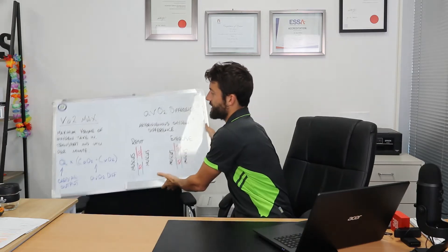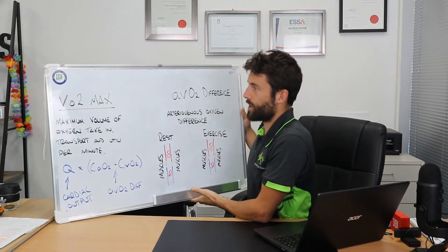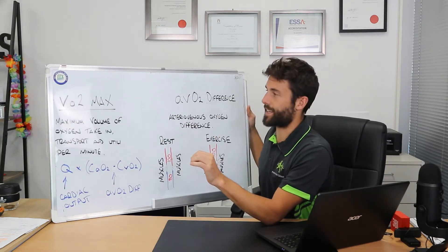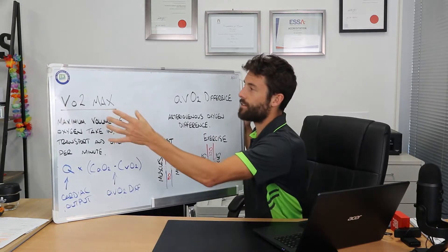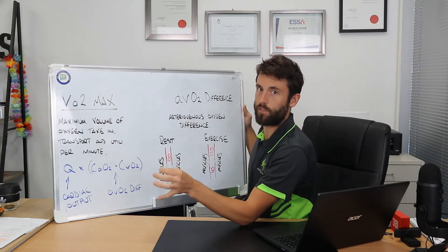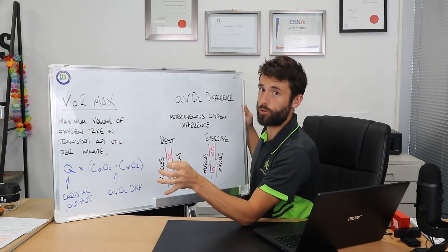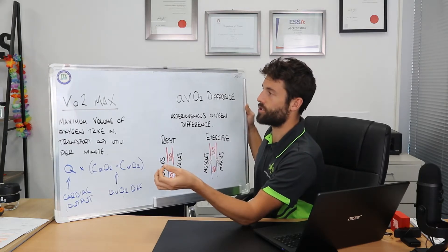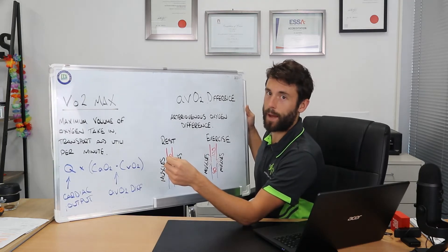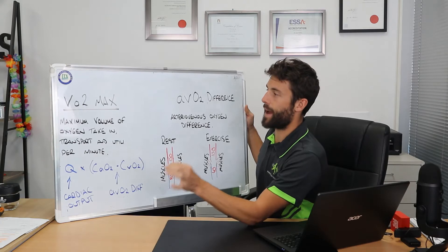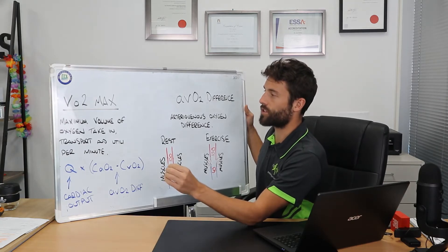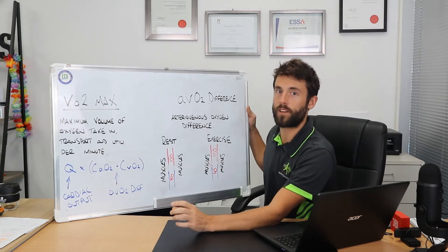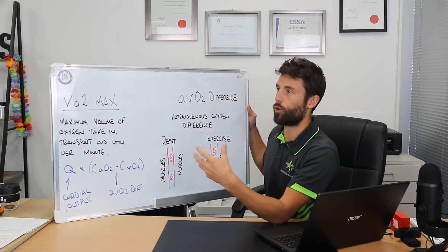I've got my assistant here which I'm going to bring up. The definition for VO2 max — if we break it down: capital V for volume, O2 of course meaning oxygen, and max meaning maximum. So we talk about the maximum volume of oxygen that we can take in, transport, and utilize per minute.